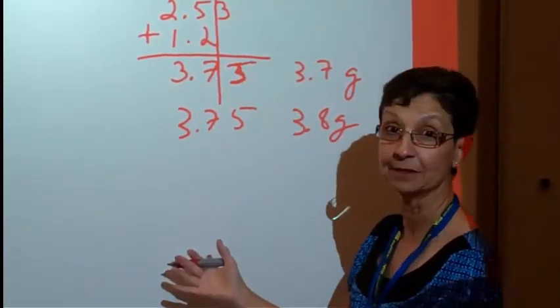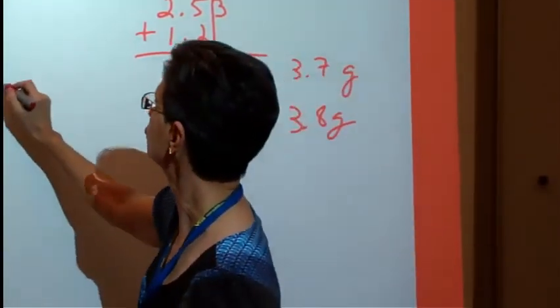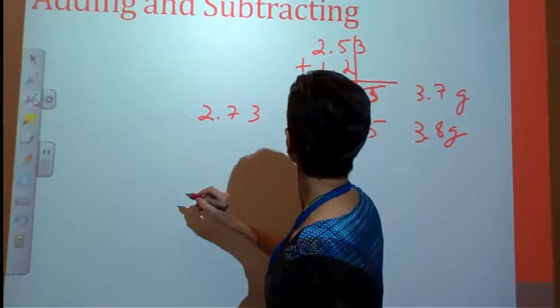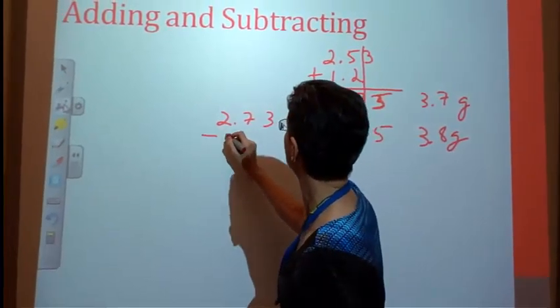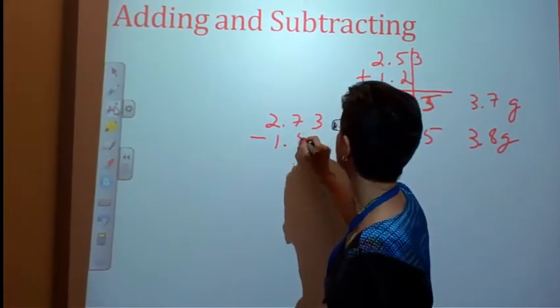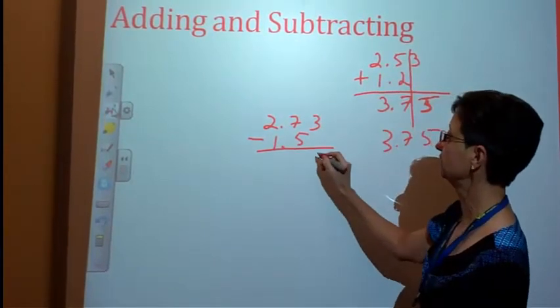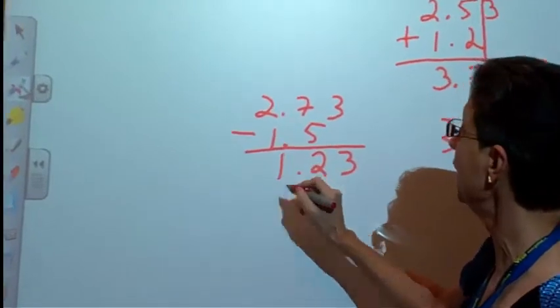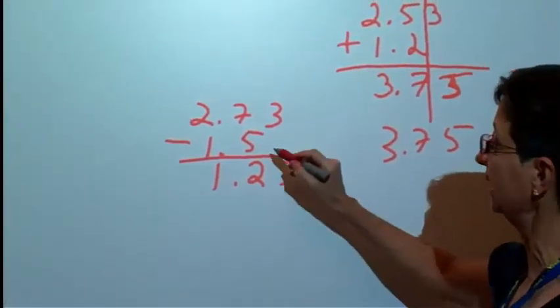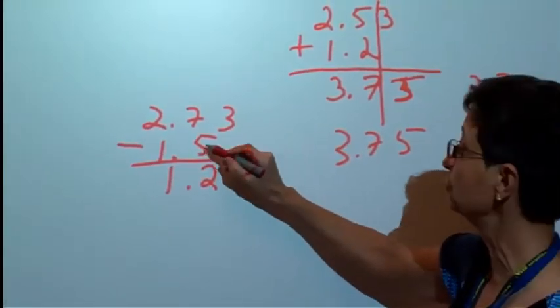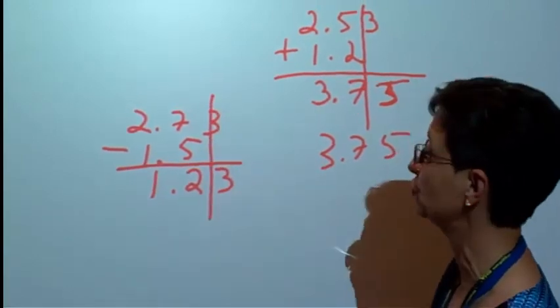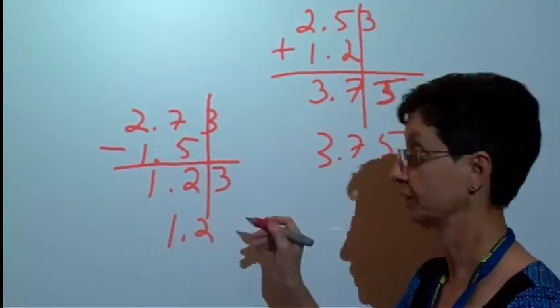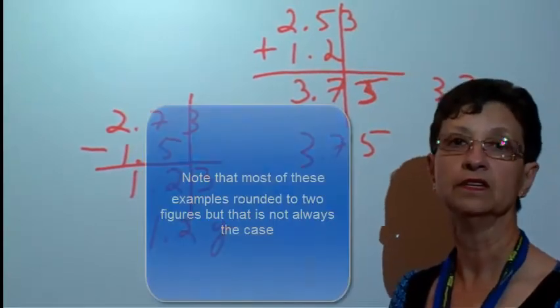Exactly the same holds true. 2.73 minus 1.5. If we do this calculation, we end up with a 3, a 2, and a 1. 1.23. Again, least accurate measurement, 1.5. I'm going to draw my line right here. My answer is 1.2. Whether it's grams or whatever the unit is.